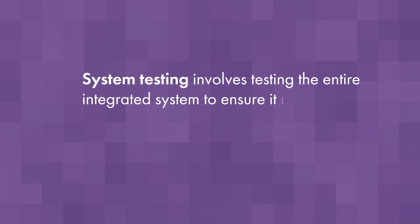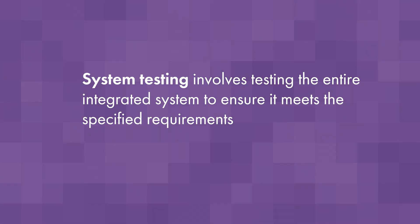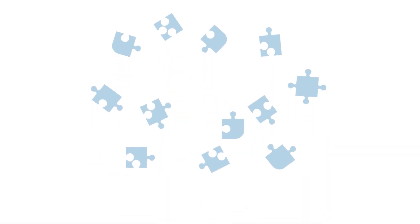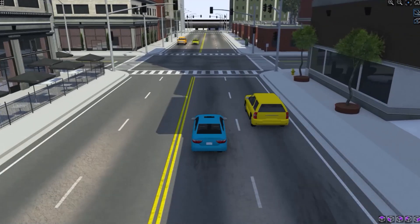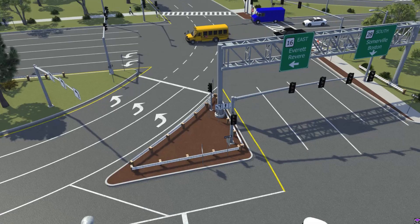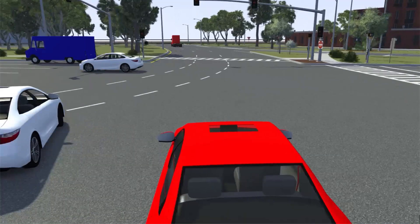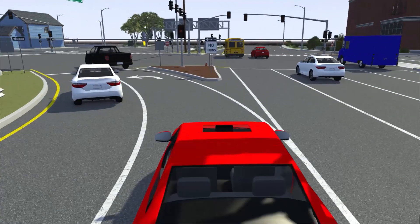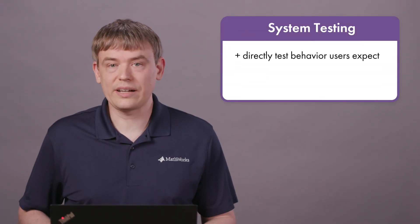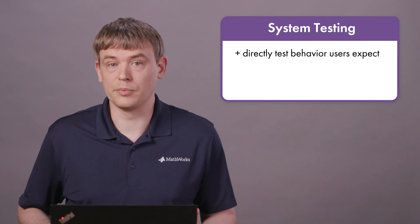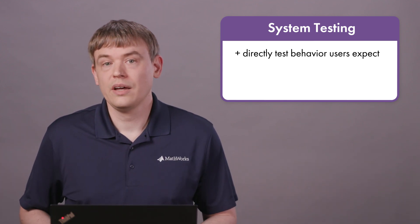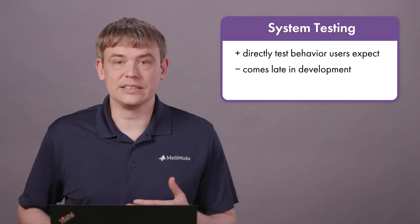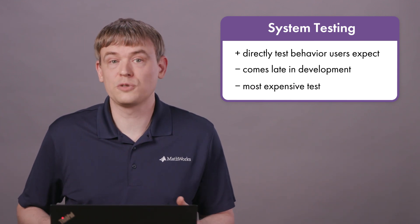System testing involves testing the entire integrated system to ensure it meets the specified requirements. It covers all the combined parts of the software to validate the full functionality. This level of testing simulates real-world scenarios to verify that the software behaves correctly under expected conditions. An example would be testing a self-driving car's ability to navigate scenarios in a virtual world. System testing has the benefit of directly testing the full behavior that users expect, and some problems will only be identified at this level. However, as it requires the full system to be available, it must be conducted later in the development process, and is the most expensive type of software testing.